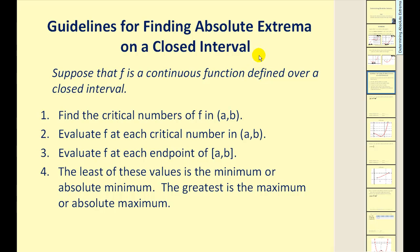Let's look at some guidelines for finding absolute extrema. Step one, find the critical numbers. Step two, evaluate the function at those critical numbers. Then evaluate the function at the end points of the closed interval. The least of these values is the absolute minimum, and the greatest is the absolute maximum.